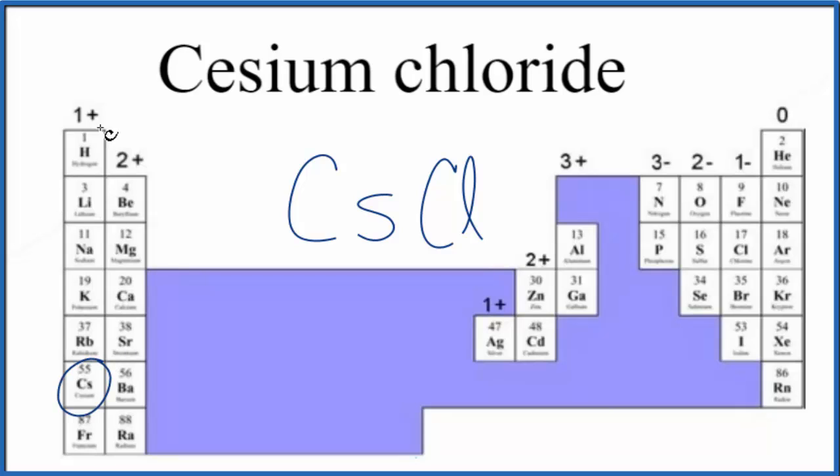So cesium right here, that's in group 1, so it has a 1 plus ionic charge. And then chlorine, the chloride ion over here, group 17, sometimes called 7A, 1 minus.